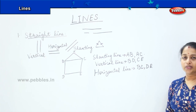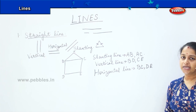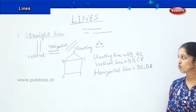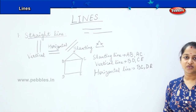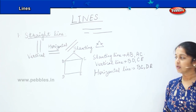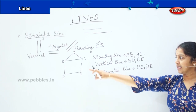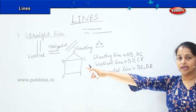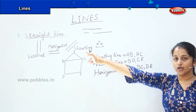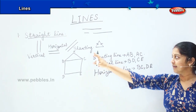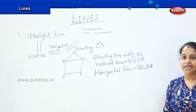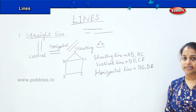Are you clear with the types of straight lines? Let's revise: the first type is the vertical line, the second is the horizontal line, and the third is the slanting line.